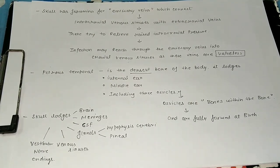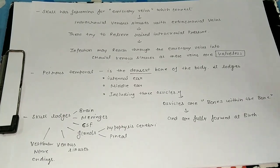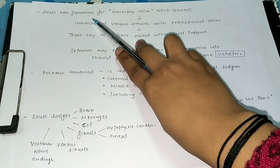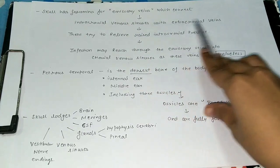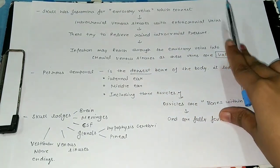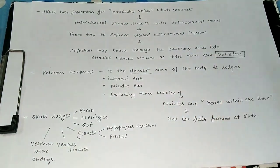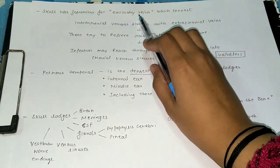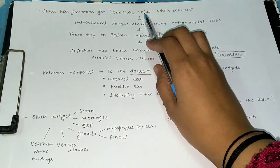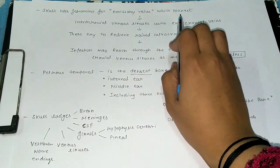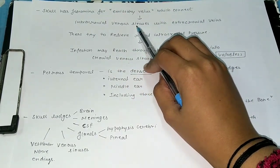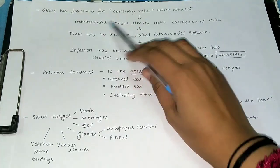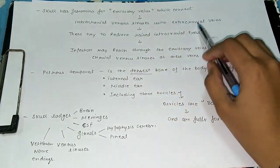So let's start. Today's topic is very important. The skull has a formula for imagery veins, which connect intracranial venous sinus with extracranial veins. This is very important. It connects the intracranial venous sinus, which is inside the cranium, with extracranial veins.